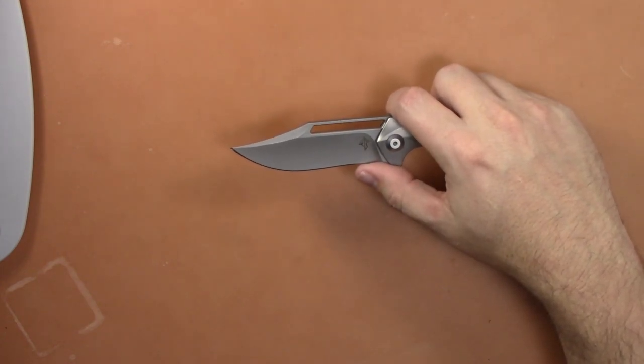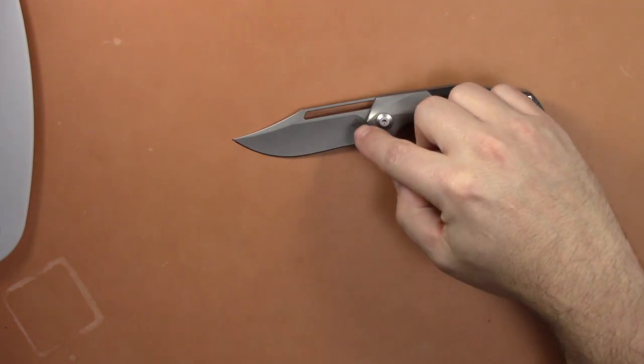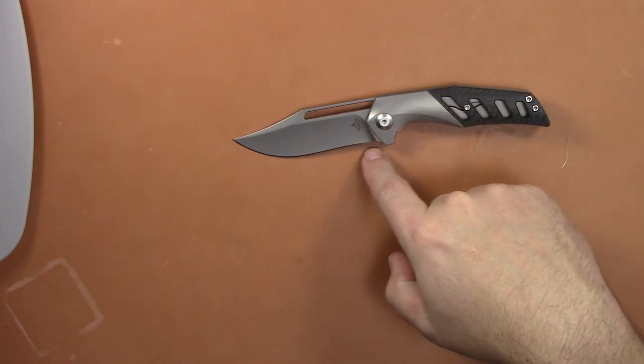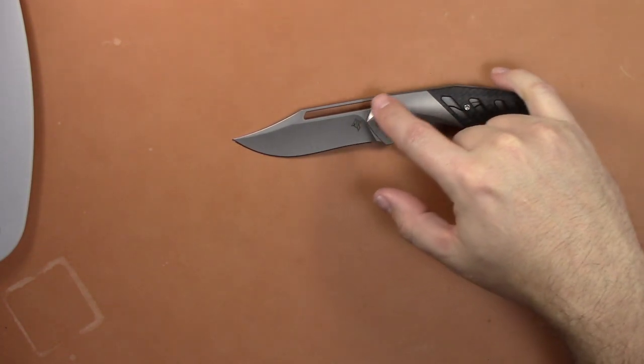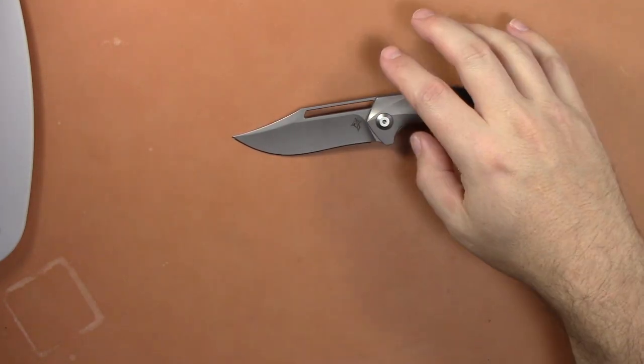It's a slight recurve on the blade, which I'm not typically a huge fan of recurves, but it's pretty slight in this, so I can deal with that. The overall length is 7.25, and I guess it weighs 3 ounces.